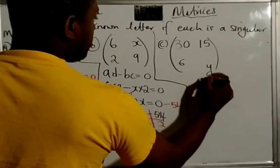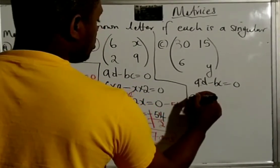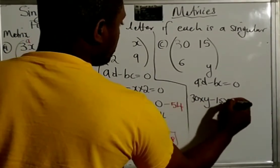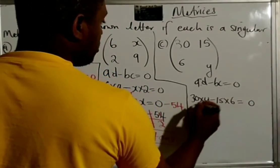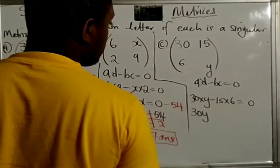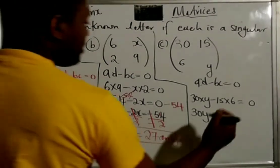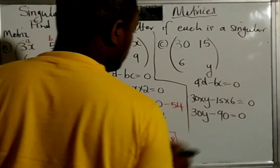Similarly, AD minus BC is equal to 0. So, it's 30 times Y, that would be 30Y, negative 15 times 6, 15 times 6 is 90. So, minus 90 is equal to 0.